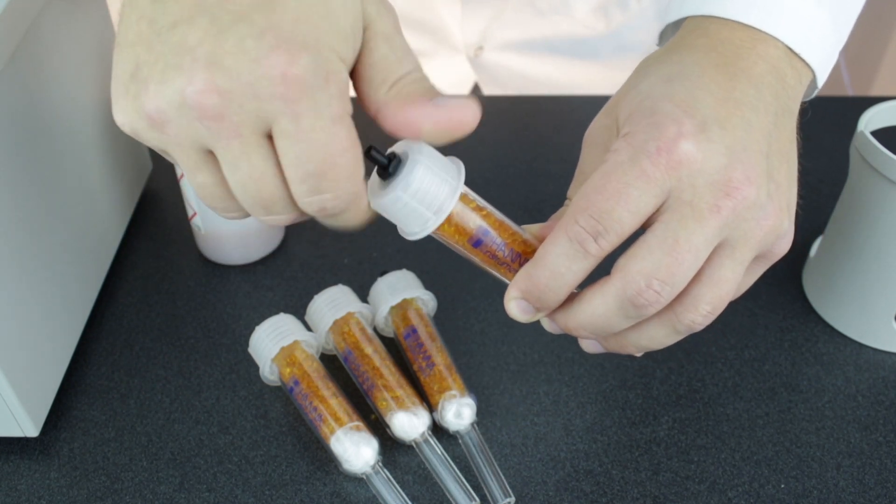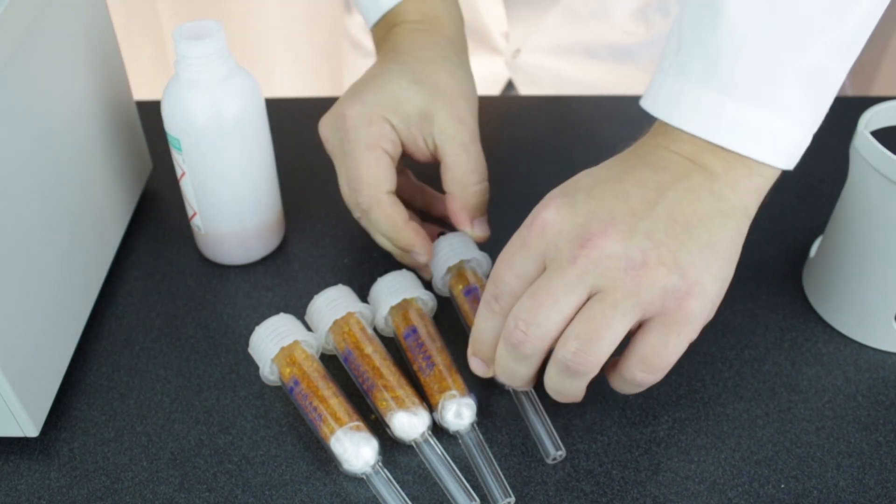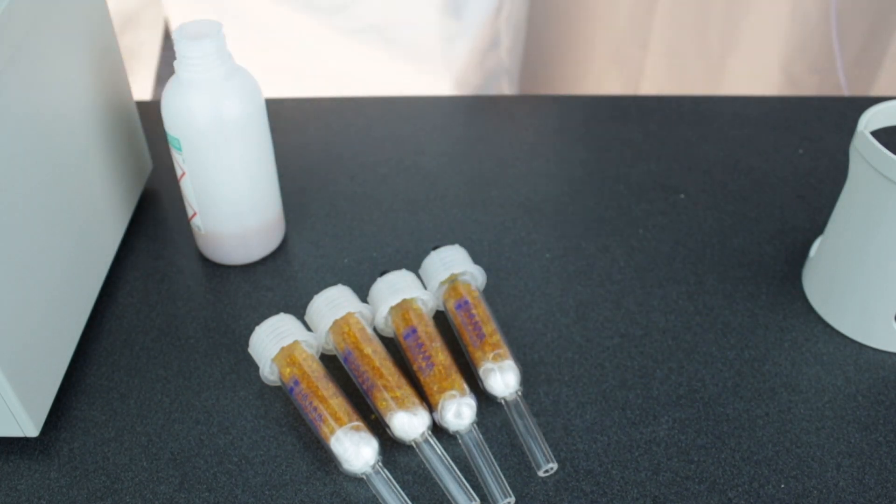Fill each cartridge with the supplied silica gel desiccant and add the caps. Note that this gel is indicating and will turn from orange to clear when it needs to be replaced or recharged. Next, attach the dosing pump and burette.